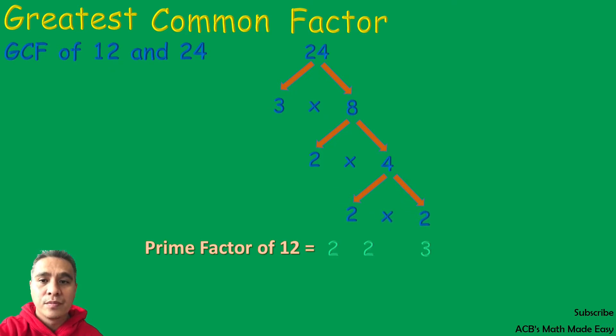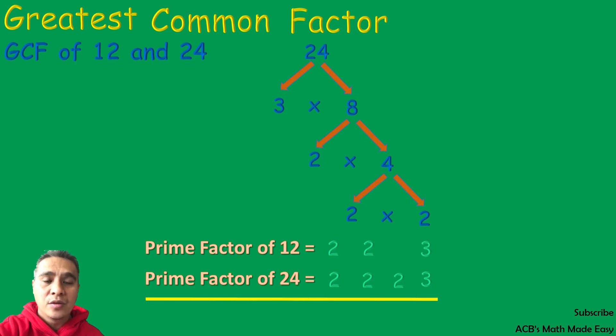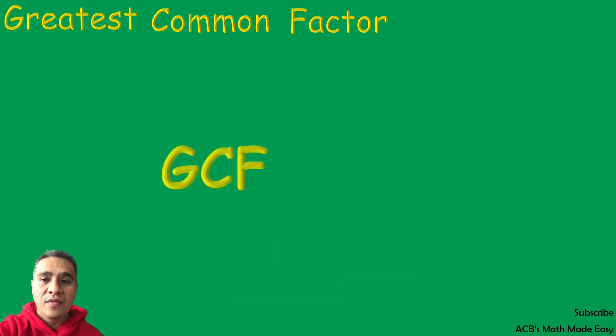The common factors of 12 and 24 are 2, 2, 2, and 3. Next step is to multiply them all. 2 times 2 times 3 equals 12. The GCF of 12 and 24 is 12.